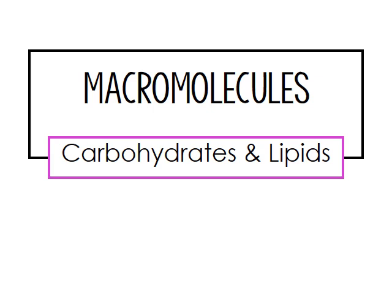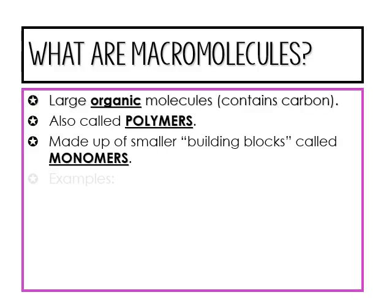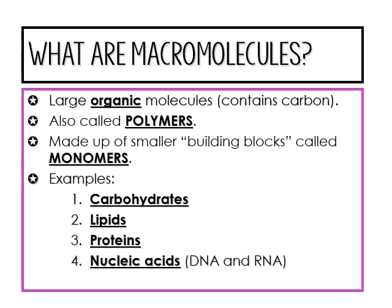We're going to talk about macromolecules, and in particular, we're going to discuss what a carbohydrate and a lipid is today. Before we go into the details, we need to define what a macromolecule is. A macromolecule is a large organic molecule — for something to be organic it has to contain carbon. We call a macromolecule a polymer, and it's made up of many building blocks called monomers.